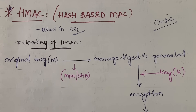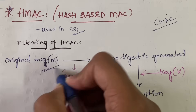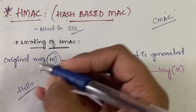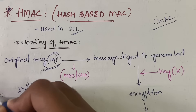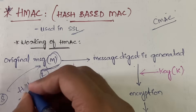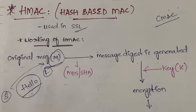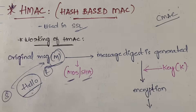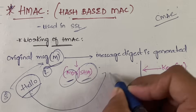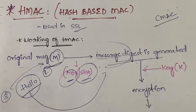Let us understand the working of HMAC. You start with the original message - for example, your original message is 'hello', something you want to send to your friend. By using either MD5 algorithm or SHA algorithm, any hash-based algorithm, you generate the message digest. In MD5 and SHA, we generate the message digest using 512-bit sub-blocks.